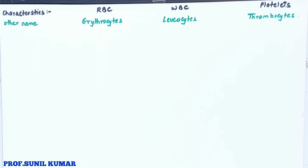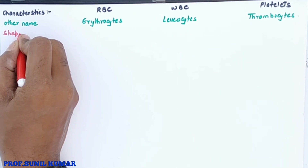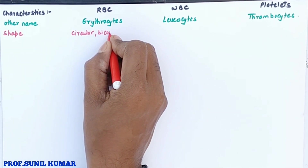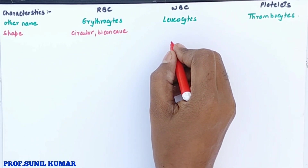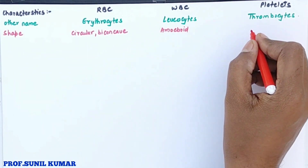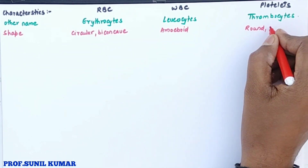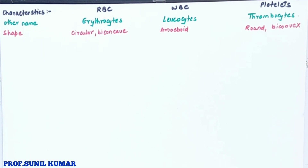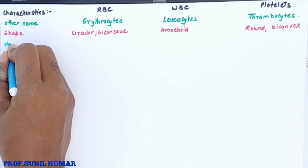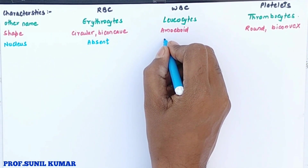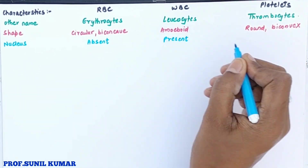The shape of RBC is circular and biconcave. The shape of WBC is amoeboid because of diapedesis. Platelets are round and biconvex in shape. Regarding the nucleus: RBC initially have a nucleus, but once matured the nucleus is absent. In WBC the nucleus is present, and in platelets the nucleus is absent.